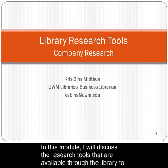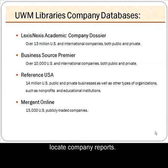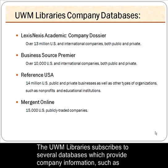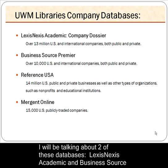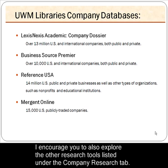In this module, I will discuss the research tools that are available through the library to locate company reports. The UWM Library subscribes to several databases which provide company information, such as profiles, financial statements and ratios, competitor lists, and more. I will be talking about two of these databases, LexisNexis Academic and Business Source Premier. I encourage you to also explore the other research tools listed under the Company Research tab in your course guide.